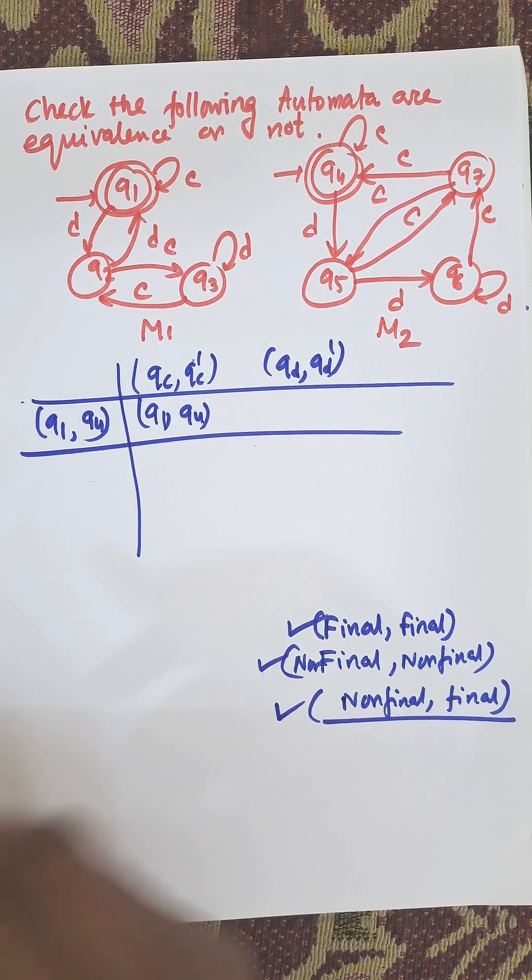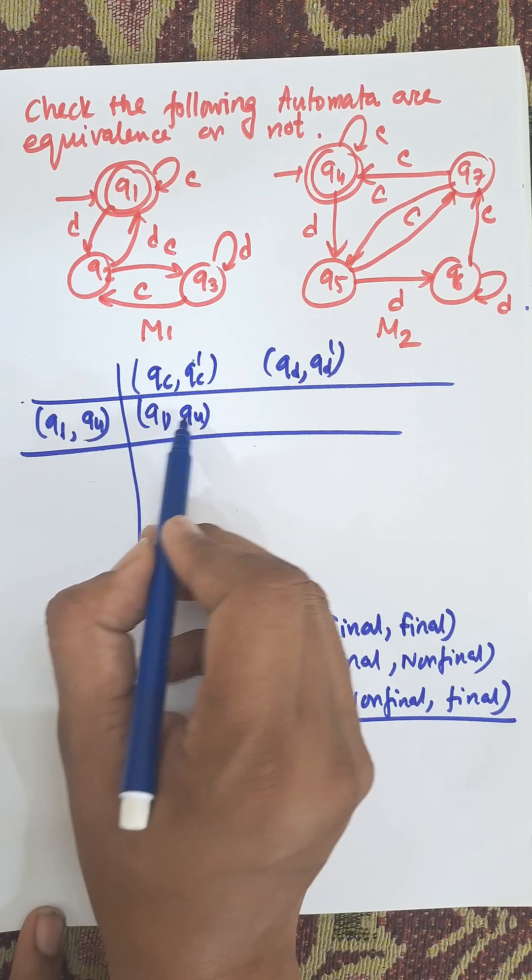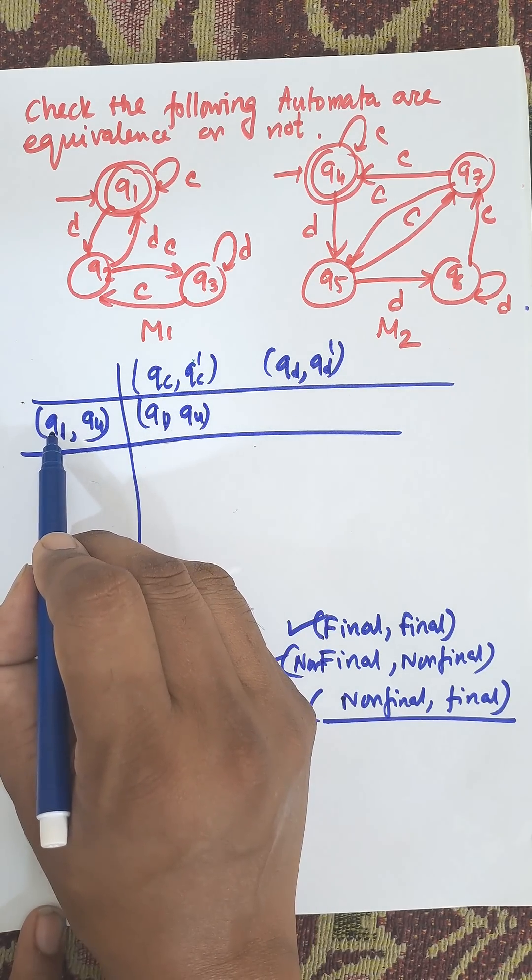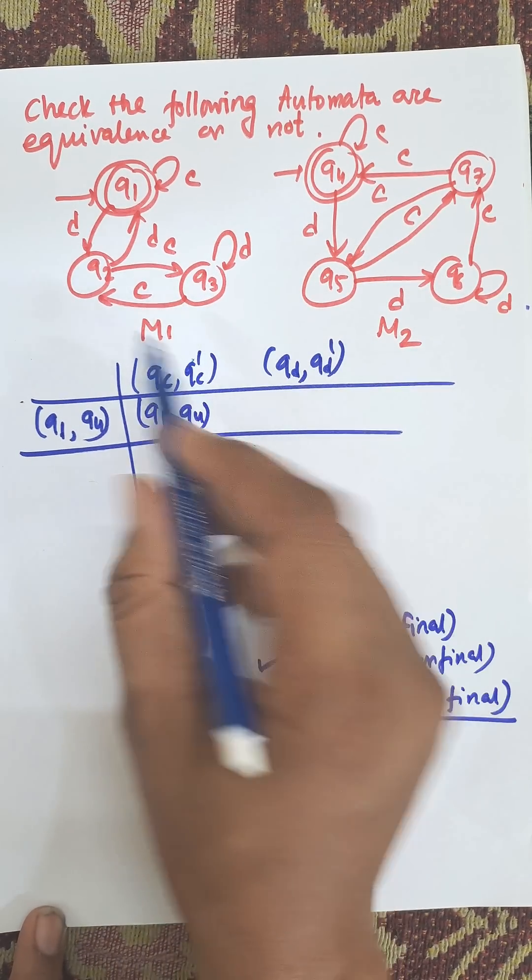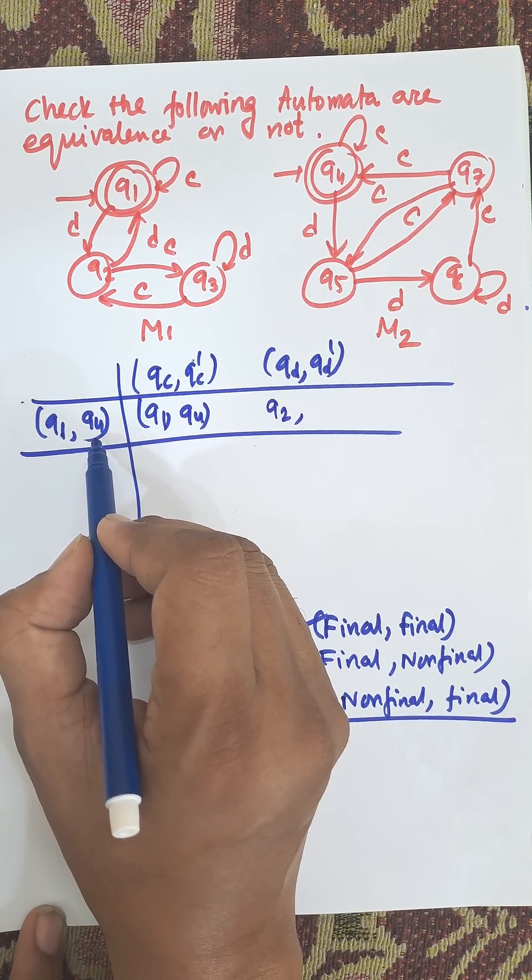Here Q1 to D is Q1 to D. These are Q1 and Q4, both are final state, so they are allowed. Q1 to D, from Q1 to D this is Q2. Q4 to D, Q4 to D, this is Q5. Both are non-final state.